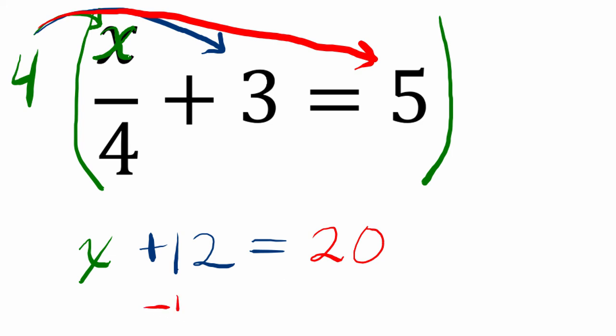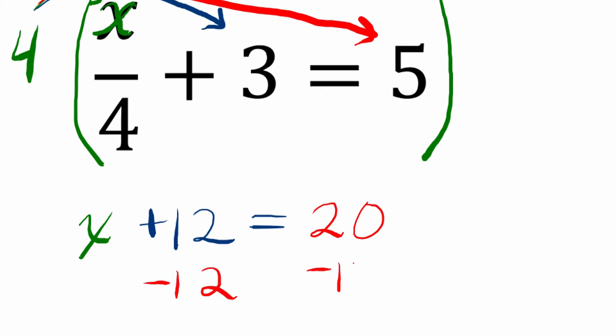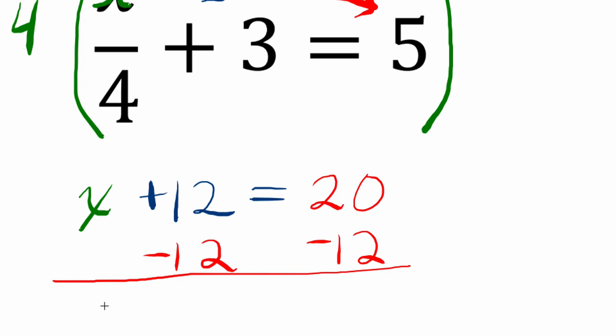And now to solve for x, I can just subtract 12 from both sides, and I'm done. 12 minus 12 is just 0, and 20 minus 12 is 8. And that's our answer.